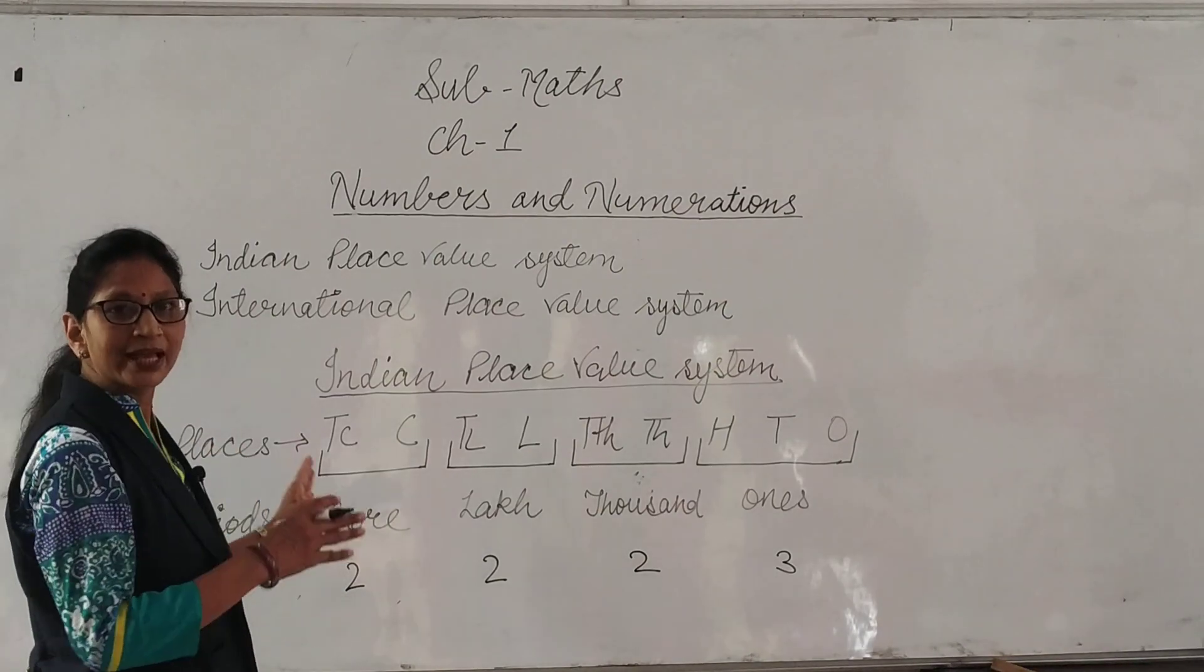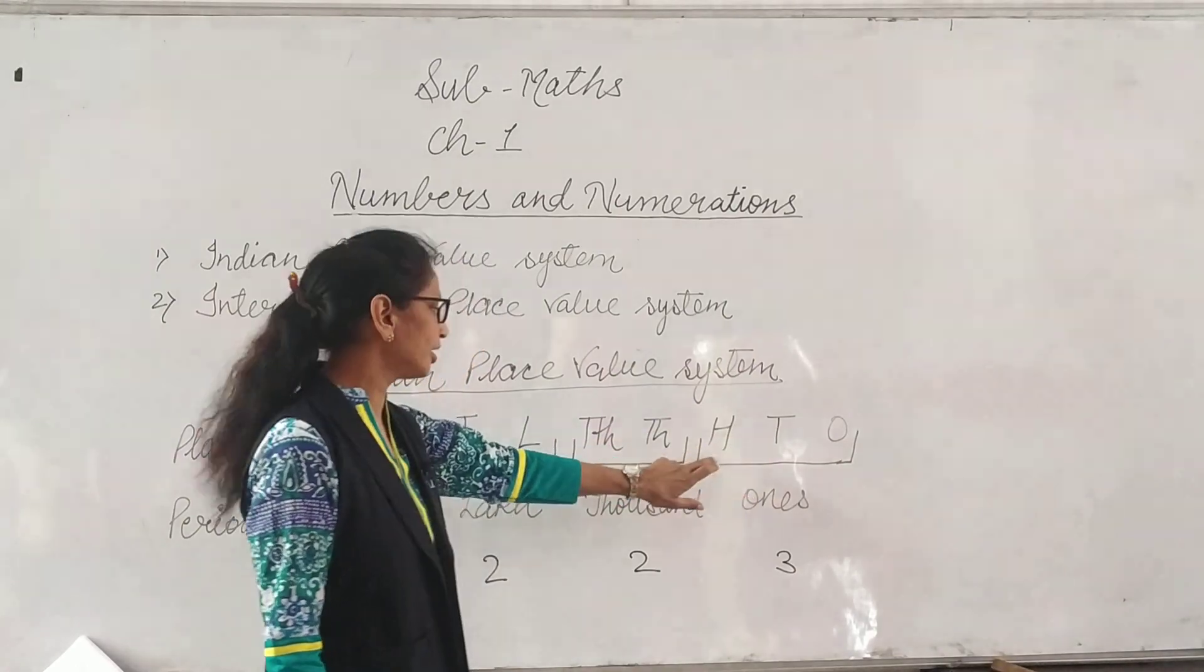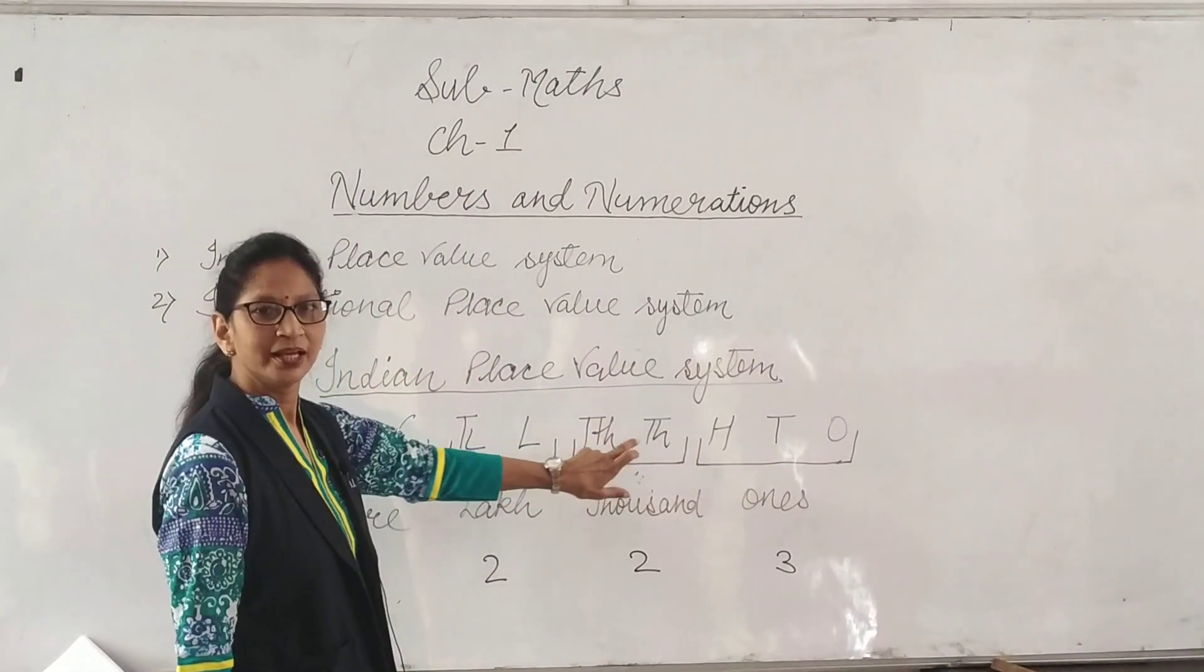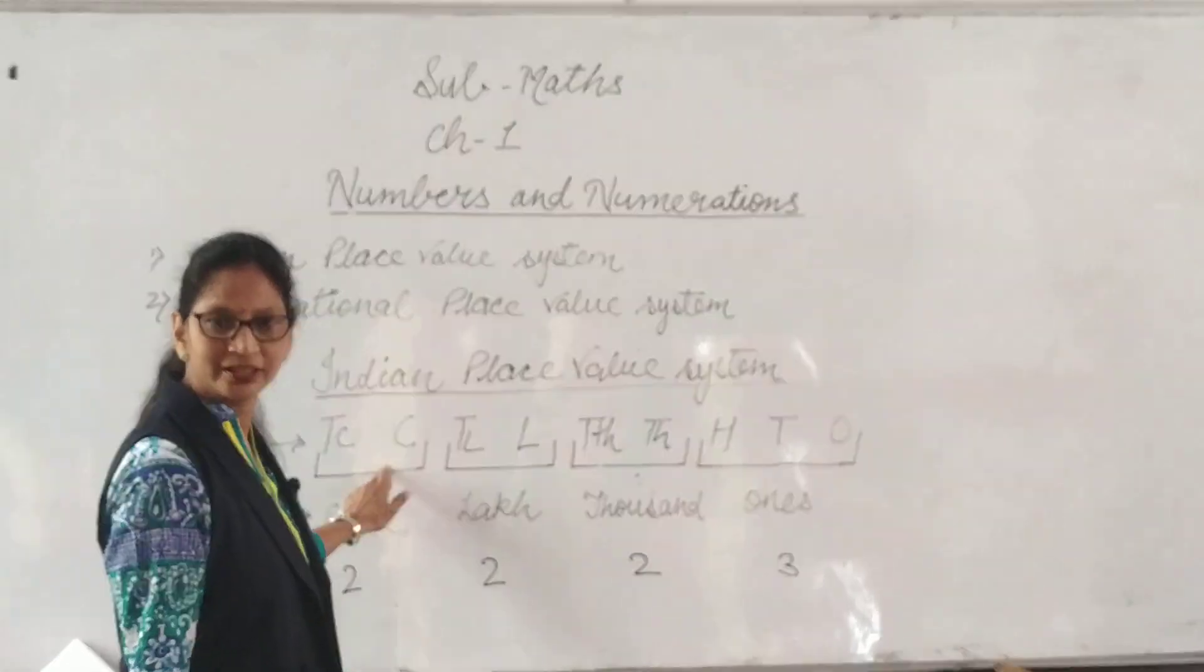There are 9 places: 1, 10, 100, 1000, 10,000, lakh, 10 lakh, crore and 10 crore.